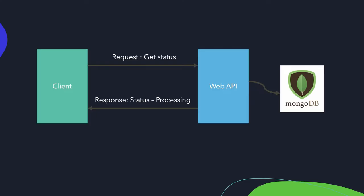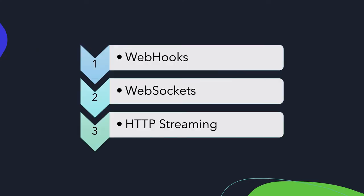This is where event-driven APIs come in — they are all about solving this kind of inefficiency. There are quite a few problems they can solve, so let's look at the different styles of event-driven APIs. There are three well-known standards for building pure event-driven APIs. Keep in mind that while there are several ways to build event-driven APIs, these three are quite commonly used to solve the inefficiencies we just talked about: webhooks, websockets, and HTTP streaming-style APIs.